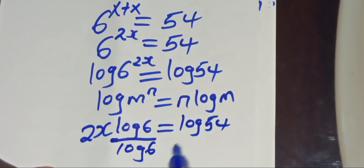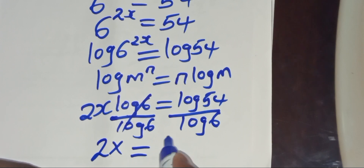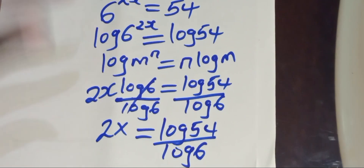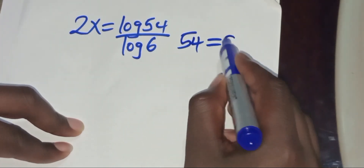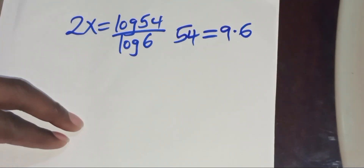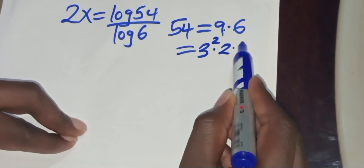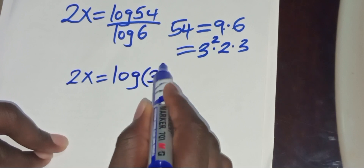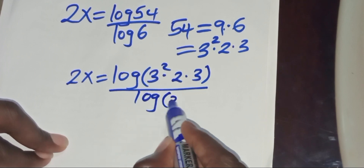We'll divide both sides by log(6), so that we have 2x equals log(54) divided by log(6). Now, we can express 54 as 9 multiplied by 6. You see, 9 times 6 equals 54. We can express 9 as 3 to the power 2, and 6 as 2 multiplied by 3. Substituting, we have 2x equals log(3² × 2 × 3) divided by log(6), and log(6) is the same as log(2 × 3).